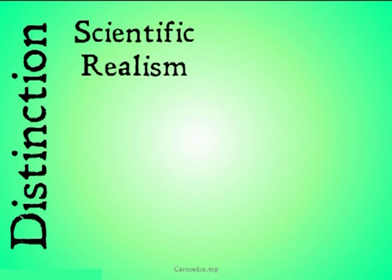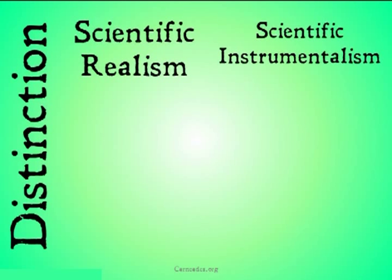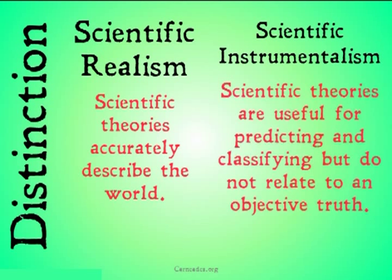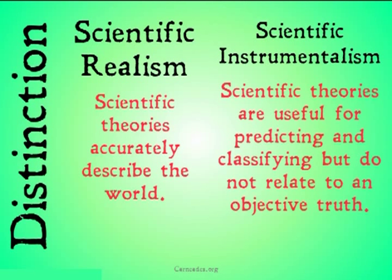There's a distinction I'd like to make between a scientific realist and a scientific instrumentalist. Scientific realism says that scientific theories accurately describe the world — that science is actually telling us something about the world. Whereas scientific instrumentalism says that scientific theories are useful for predicting and classifying, but do not relate to an objective truth and do not tell us something about the world. The scientific instrumentalist does not say we're getting knowledge, but rather merely that these theories are useful for some other purpose.